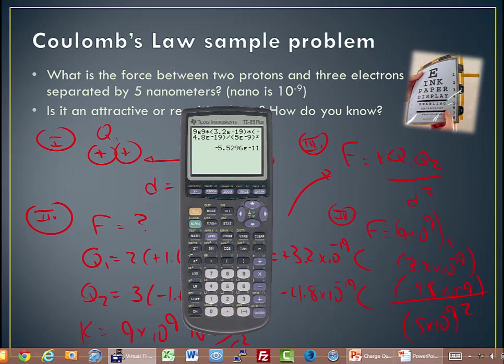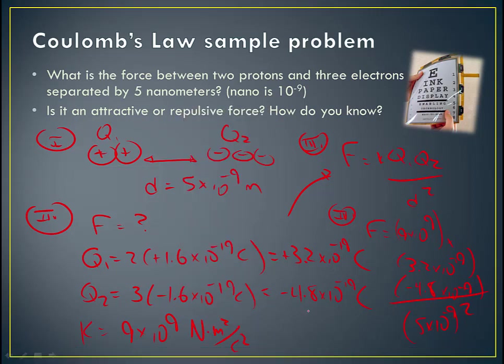And we get a final force of 5.5296. So we'll just round that off to negative 5.53 times 10 to the negative 11th. The force is equal to negative 5.53 times 10 to the negative 11th newtons of force there. So notice it's a very small force because it's a small amount of charge microscopically.